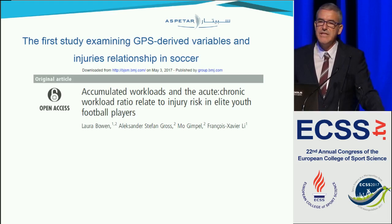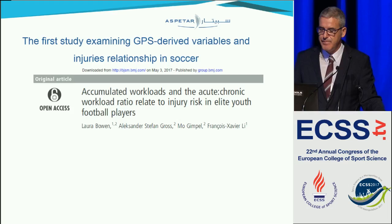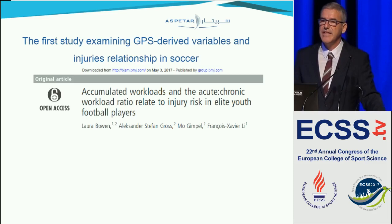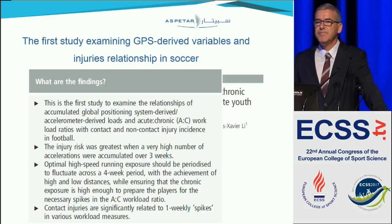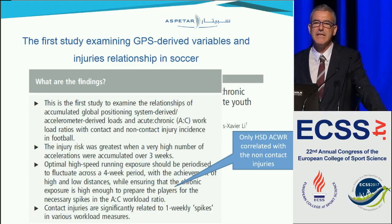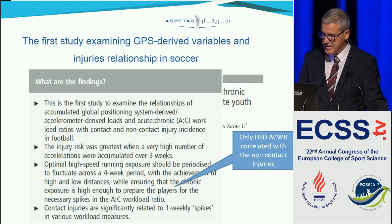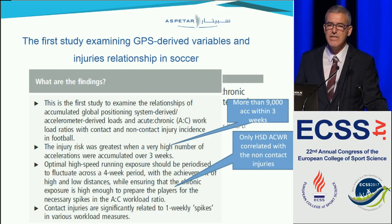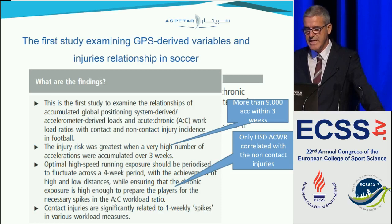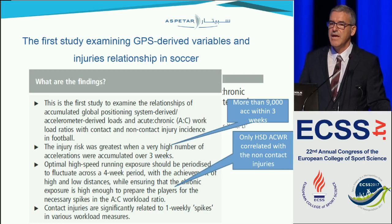Going back to the workload and injury story, this is the first study with GPS-derived variables and injuries in soccer, published in early 2017 in the British Journal of Sports Medicine using data from youth football players. From this extensive analysis, the authors showed a relationship only between high-speed distance acute-to-chronic workload ratio and non-contact injuries. Additionally, only acceleration was associated with injury — specifically, players with more than 9,000 accelerations within three weeks were at higher injury risk.